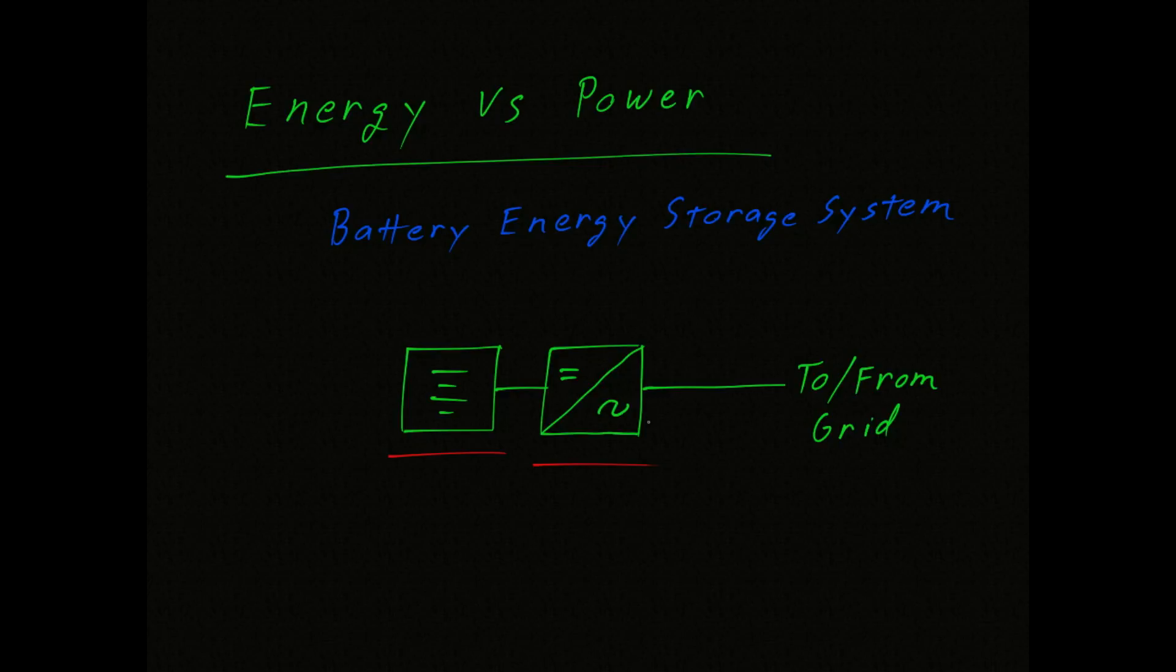Once again, I'm using a one-line diagram. In reality, this is a three-phase system, and there are three wires headed out to town, and there are at least two connections to the battery.